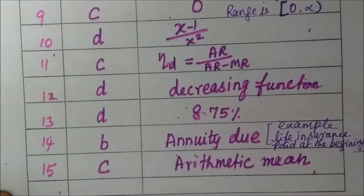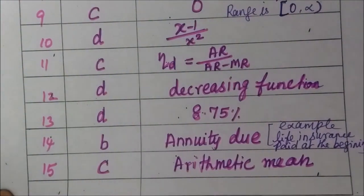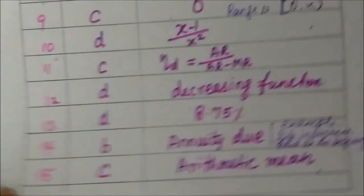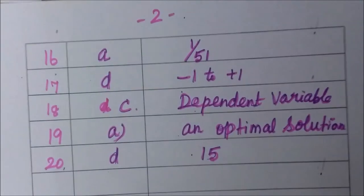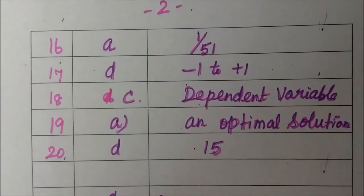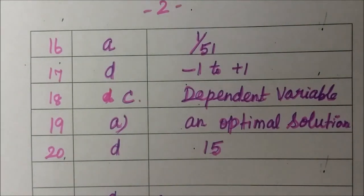Question 15: option c, arithmetic mean. Question 16: option a, 1 by 51. Question 17: option d, minus 1 to plus 1. Question 18: option c, dependent variable.